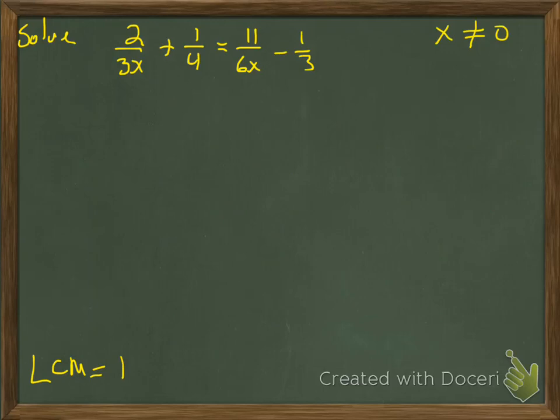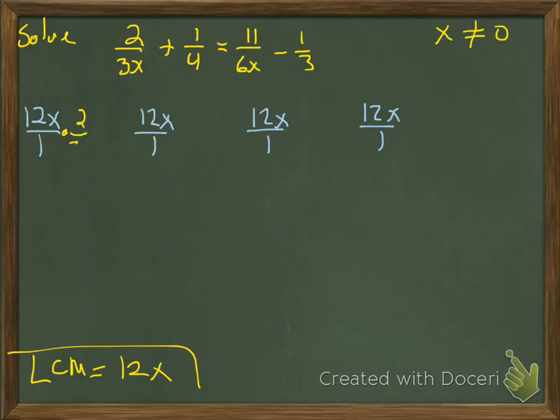My LCM here is for 3, 4, and 6, which is 12. Then we need to put an x on there because we have denominators with x's. So it has to be 12x. Everybody gets multiplied by 12x over 1. Because they're all fractions, we're going to do 12x over 1. Then it's just four multiplication problems and we're going to cross-cancel and reduce each one.